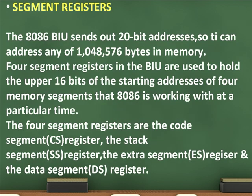Segment Registers. The 8086 BIU sends out 20-bit addresses so it can address any of 1,048,576 bytes in memory. Four segment registers in the BIU hold the upper 16 bits of the starting addresses of four memory segments that the 8086 is working with at a particular time. The four segment registers are the code segment CS register, the stack segment SS register, the extra segment ES register, and the data segment DS register.